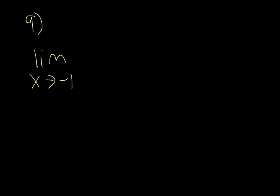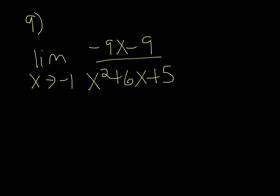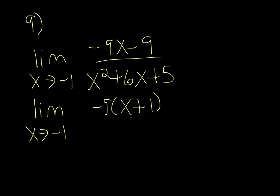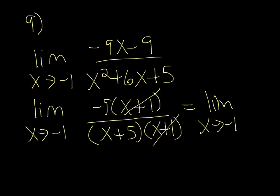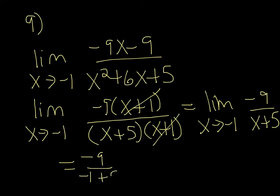Number 9: evaluate the limit as x approaches negative 1 of negative 9x minus 9 over x squared plus 6x plus 5. Because it's a rational function, you want to factor it if you can. We can take a negative 9 out in the numerator, and the bottom factors to x plus 5 and x plus 1. We're able to cross out the x plus 1s, so we're just looking at the limit as x approaches negative 1 of negative 9 over x plus 5. Plug in negative 1: negative 1 plus 5 on the bottom gives us negative 9 over 4.